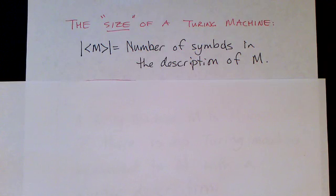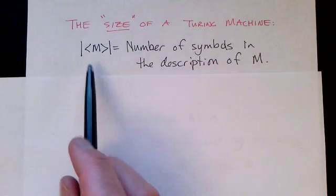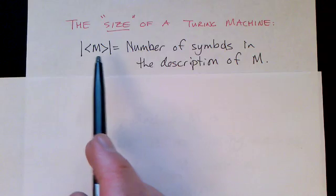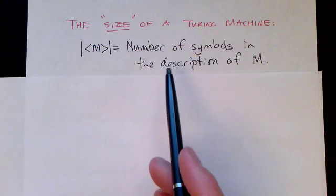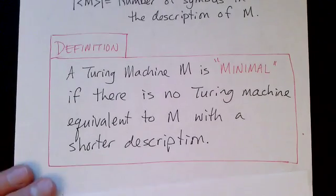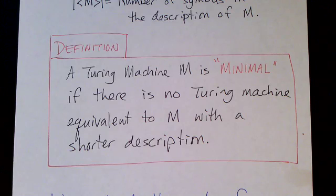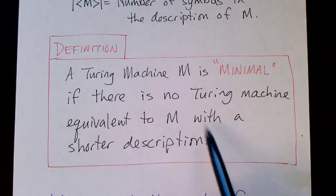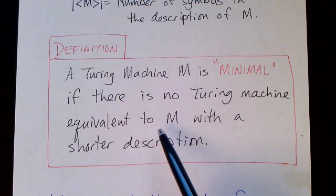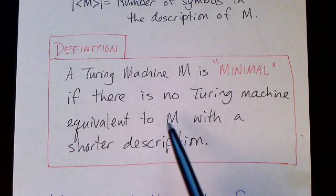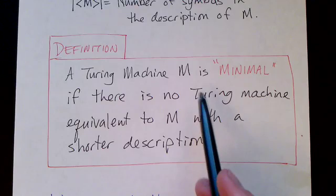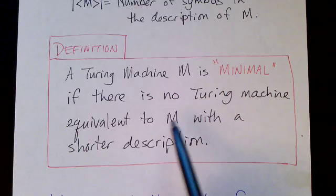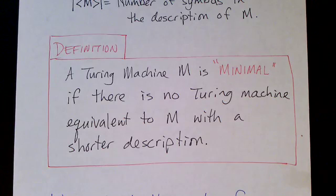Next, let's define the size of a Turing machine. We could define it in a number of ways — for example, the number of states or the number of transitions. But one natural way to define the size of a Turing machine is to count the number of symbols in any description of the Turing machine. Given that meaning of size, we can say that a Turing machine is minimal if there is no Turing machine equivalent to M with a shorter description. Two Turing machines are equivalent if they do the same thing, and a Turing machine is minimal if no equivalent machine has a shorter description.